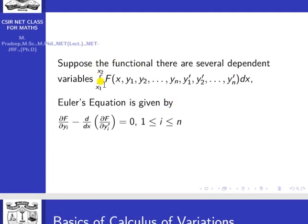Next, suppose the function depends on several dependent variables. If the integral involves F(x, y1, y2, ..., yn, y1', y2', ..., yn'), then the Euler equation reduces to a system: ∂f/∂yi − d/dx(∂f/∂yi') = 0, where i runs from 1 to n. So for each dependent variable yi, we write a separate Euler equation.